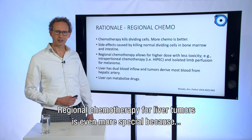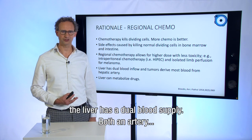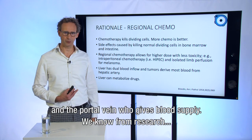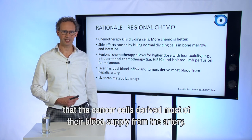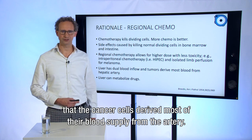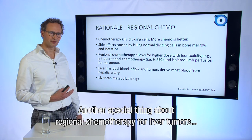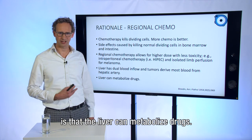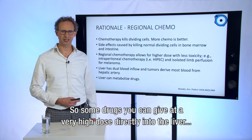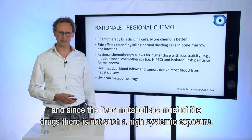Liver regional chemotherapy for liver tumors is even more special because the liver has a dual blood supply — both an artery and a portal vein which provide blood supply. We know from research that the cancer cells derive most of their blood supply from the artery. Another special thing is that the liver can actually metabolize drugs, so some drugs you can give at a very high dose directly into the liver, and since the liver metabolizes most of the drug, there's not such a high systemic exposure.